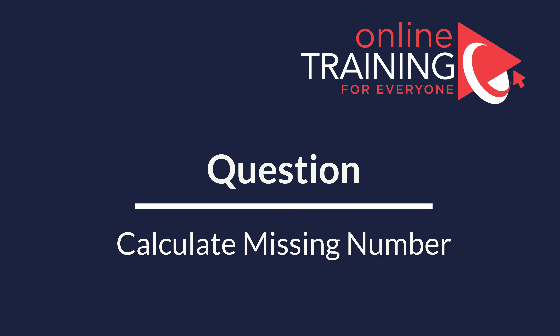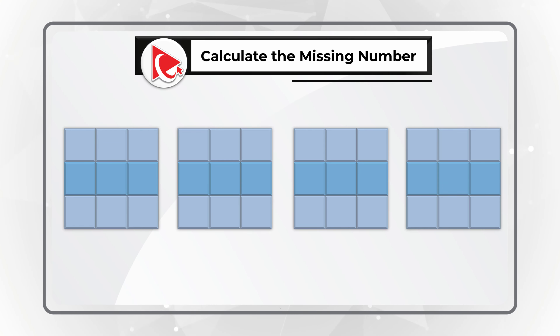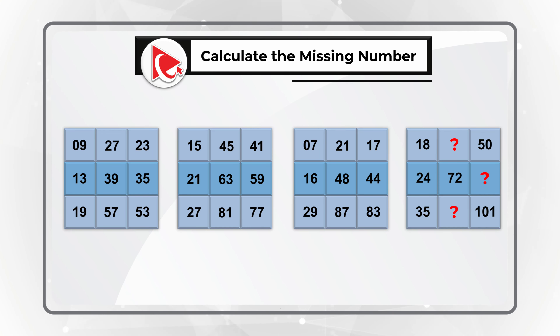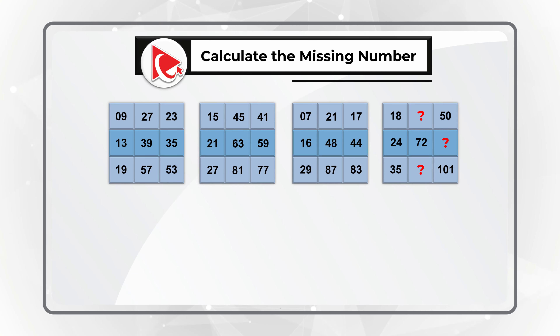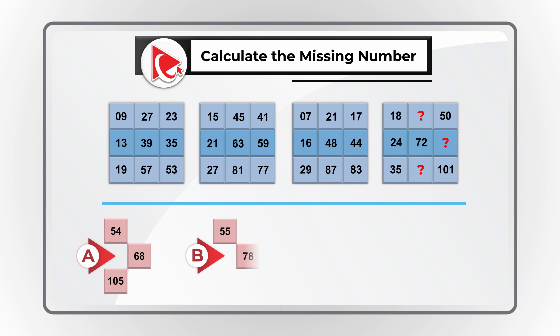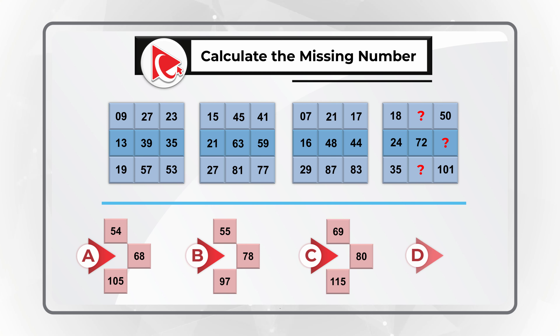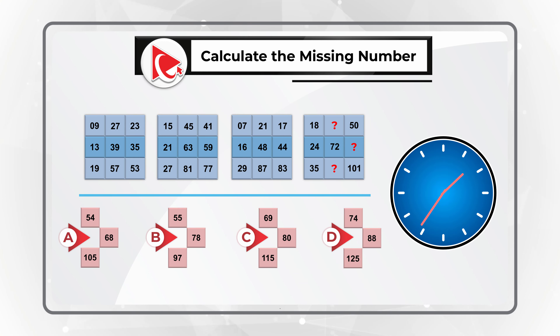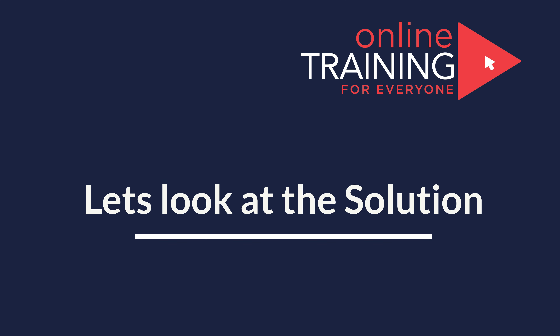Here is an amazing question which truly tests your analytical skills. You are presented with four sets of 3×3 matrices — each matrix has nine numbers, and in matrix 4 there are three missing numbers to calculate. Four choices: A: 54, 68, 105; B: 55, 78, 97; C: 69, 80, 115; D: 74, 88, 125. Give yourself 20 to 30 seconds by pausing this video to see if you can come up with the solution. I am moving forward to reveal my version.